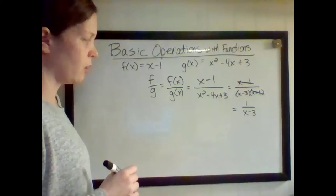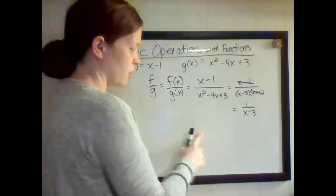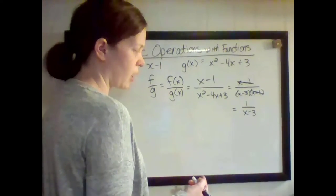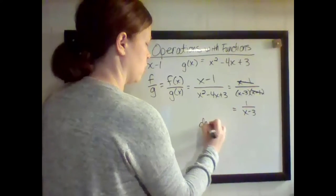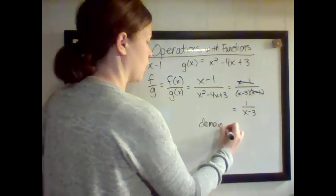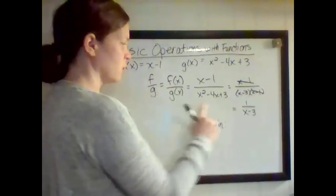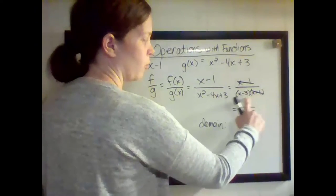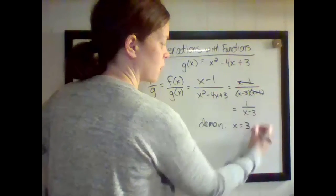Now let's go one step further and list the domain. Since I have a rational expression, I need to know the domain. We figure out the domain before we do any canceling, so we have to take into consideration both factors. So x cannot equal 3 and x cannot equal 1.